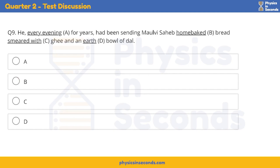Moving on to the next one: 'Then he, every evening for years, had been sending Maulvi sahab baked bread smeared with ghee and an earth bowl of dal.' Now, 'earth bowl' is not correct — it should obviously be 'earthen bowl'. So the right option is option delta.